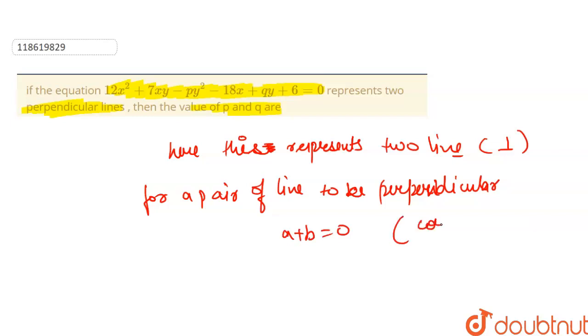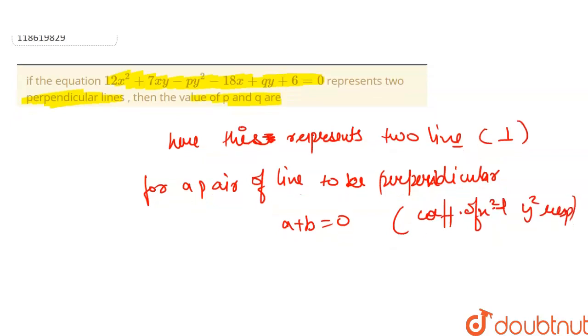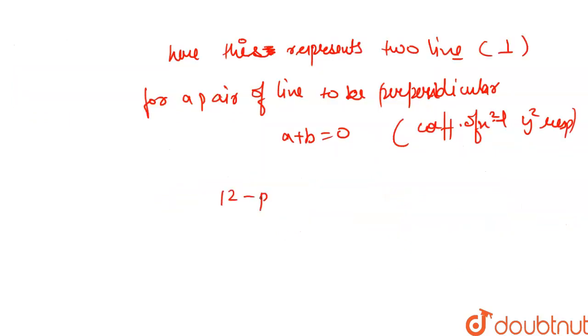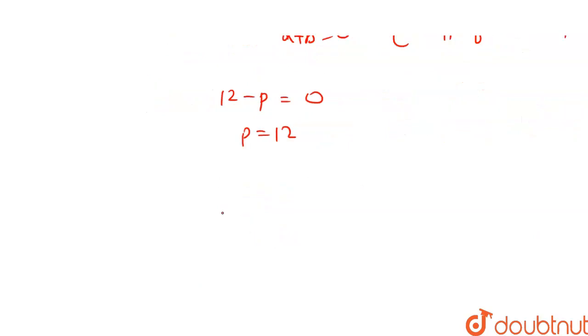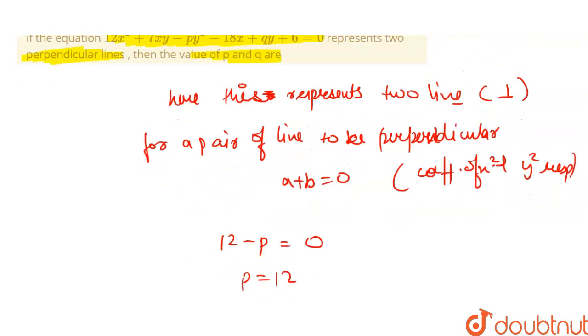With the general equation, a is equal to 12, b is minus 12, h is equal to 7 by 2.